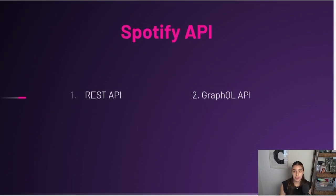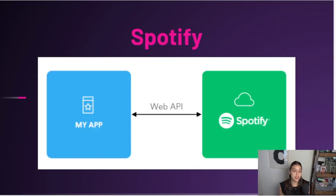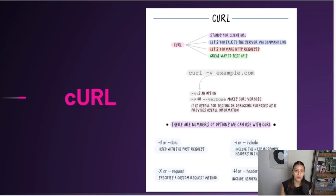We're going to do two different exercises — one with the REST API and one with the GraphQL API — so you can see the differences and why a lot of modern teams and developers are switching to GraphQL. Our app will make requests to the Spotify web API, which goes back and forth between our app and Spotify's servers to give us the information we want. We'll use curl — client URL — to make requests via the command line. It lets you talk to a server, make requests, and it's a great way to test APIs. It comes pre-installed on Mac and most Windows machines.